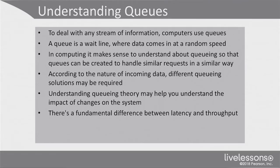Before we start optimizing anything, we need to know a little bit about queuing and how the computer is dealing with that. So what exactly is going on with the queues? To deal with any stream of information, computers use queues. It's like in normal life — if you go to the grocery store and there's a lot of people that need to go to the cash register, there's a queue as well. It's not fundamentally different on a computer.